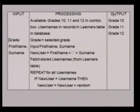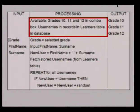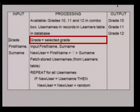Let's look at the IPO table for a register event. This user is going to register on the system and his details will be stored in a database. This register event inputs the user's details to be stored as a new record in the database. Take note that the grades are shown in the IPO table as available — this means the program has access to additional data which does not have to be input by the user. All three grades are available and the user gives input by selecting one grade.